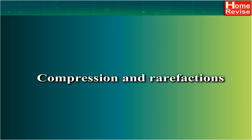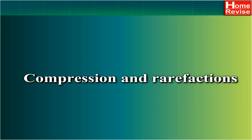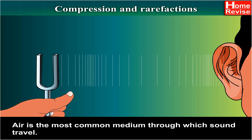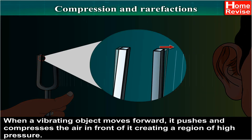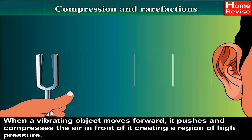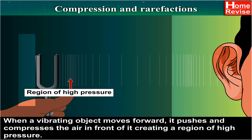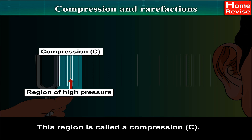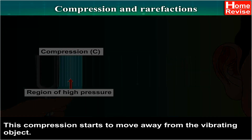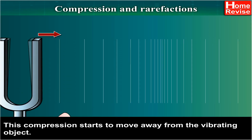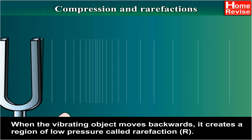Air is the most common medium through which sound travels. When a vibrating object moves forward, it pushes and compresses the air in front of it, creating a region of high pressure. This region is called a compression, or C. This compression starts to move away from the vibrating object.